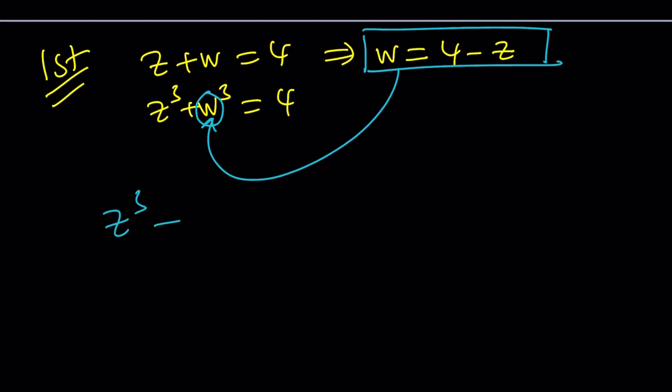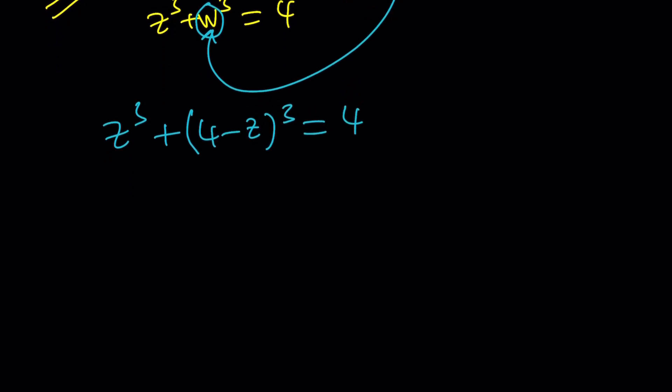Z cubed plus 4 minus z cubed equals 4. And then let's go ahead and expand it. We're going to get z cubed plus, this is going to give me 64 minus z cubed minus 12z times 4 minus z. I'm just using my formula that I'm used to. A minus B quantity cubed is A cubed minus B cubed minus 3AB multiplied by A minus B. That's the formula I use. And this is equal to 4.